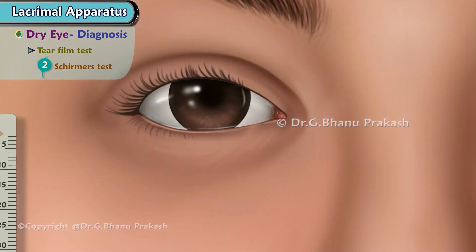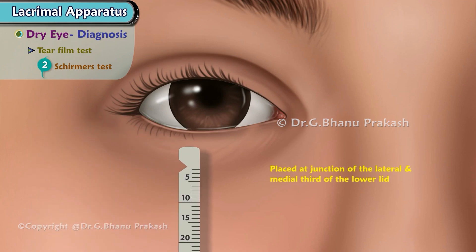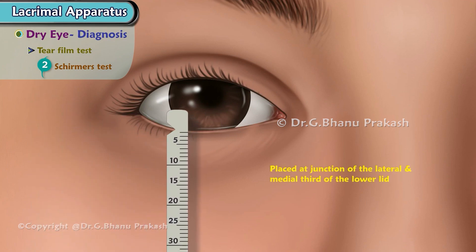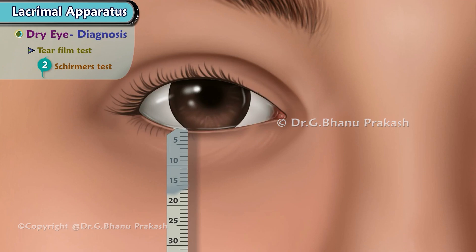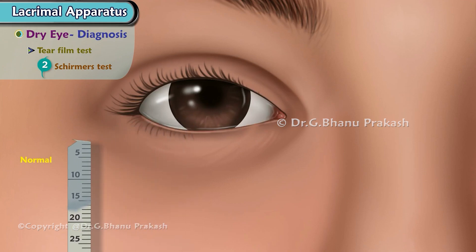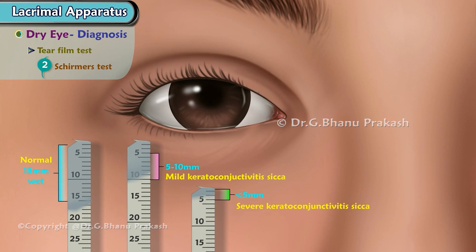2. Schirmer's test: 5x35 mm strips of Whatman No. 41 filter paper are placed at the junction of the lateral and medial third of the lower lid. After 5 minutes, the paper is removed and tested for moisture content. Normal is 15 mm wet; 5-10 mm indicates mild keratoconjunctivitis sicca; less than 5 mm indicates severe keratoconjunctivitis sicca.